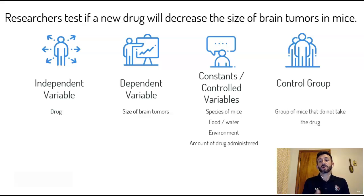And then a control group is a group of mice that do not receive the independent variable. This way you can know whether or not a change in brain tumor just happens randomly or it's just happening because of something else.